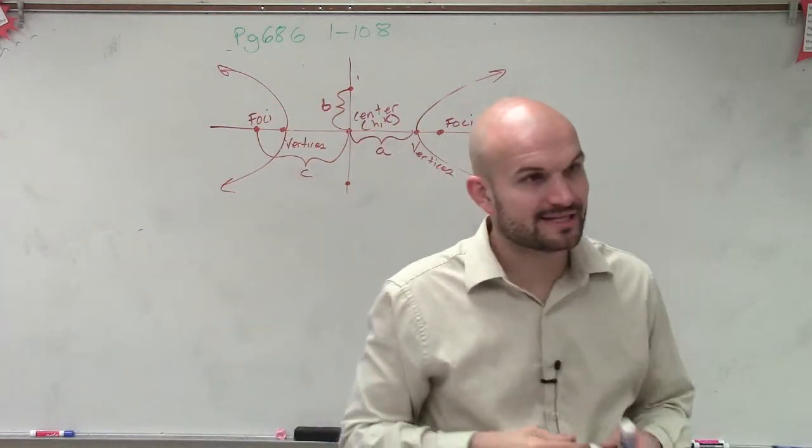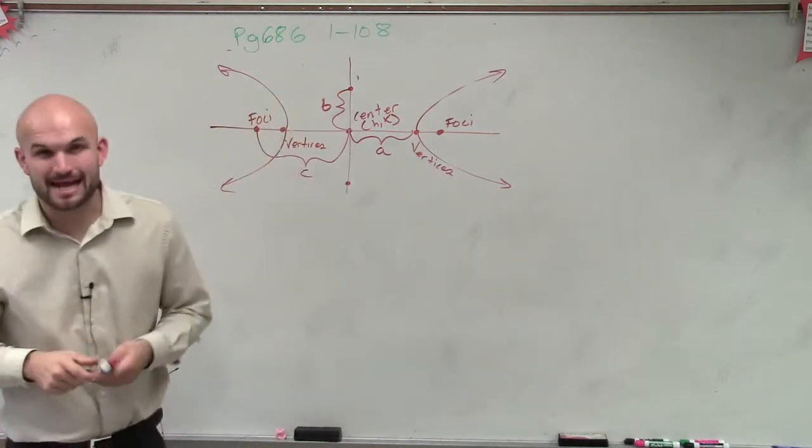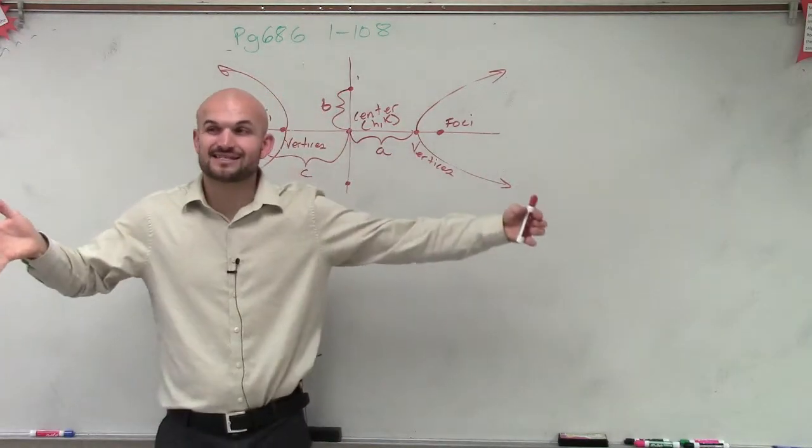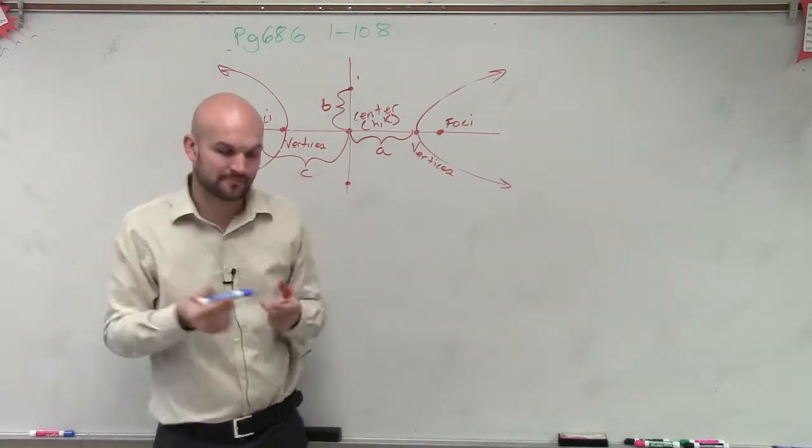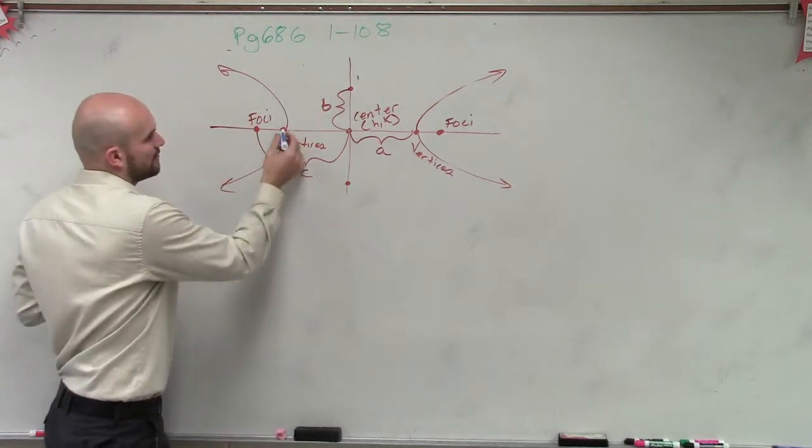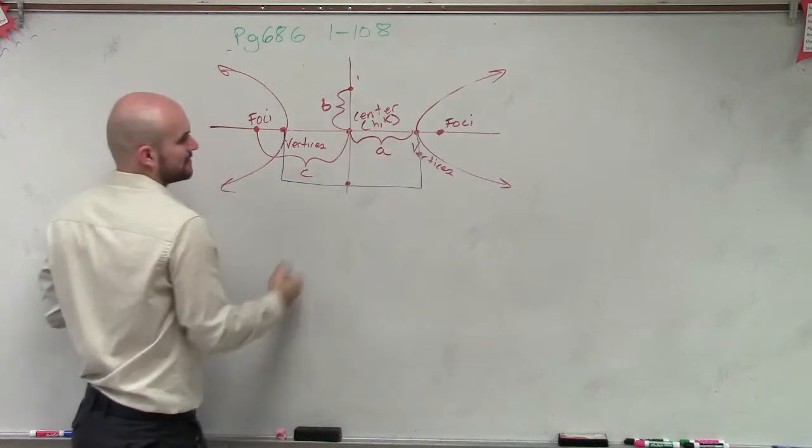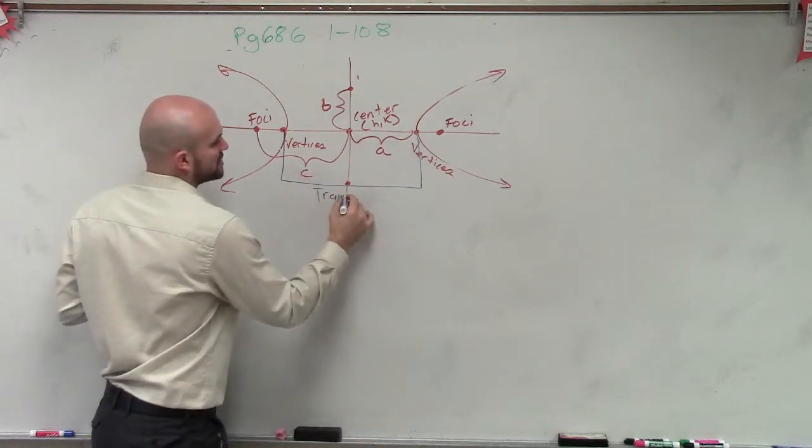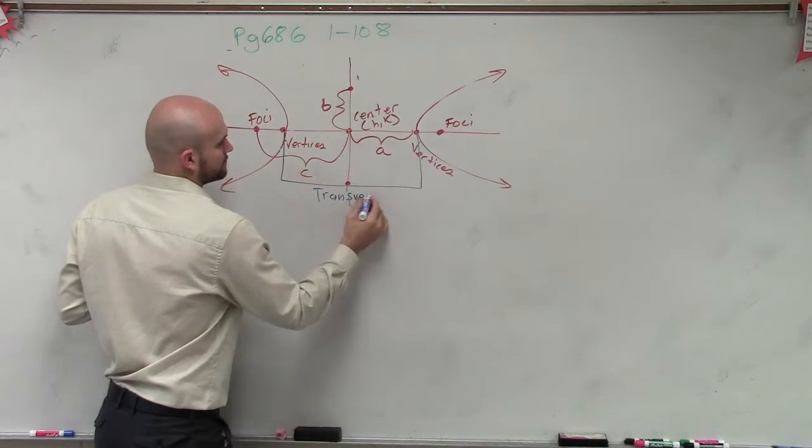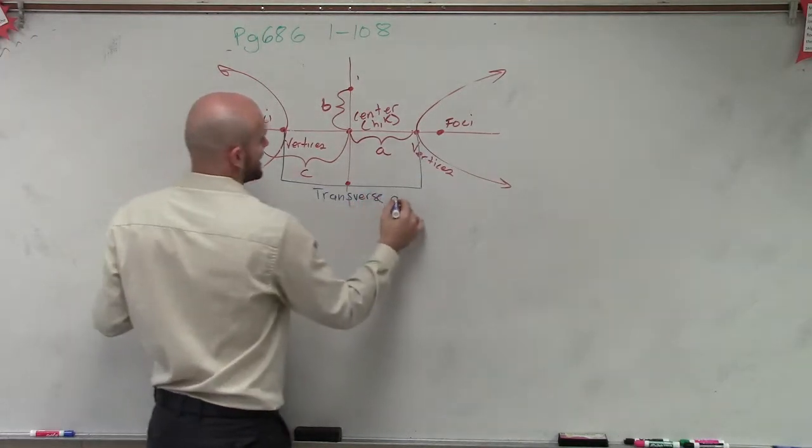Then, now we need to kind of look at also what are going to be the names, because remember on an ellipse, we had a major axis and a minor axis. So the distance from a over to a is what we call our transverse axis.